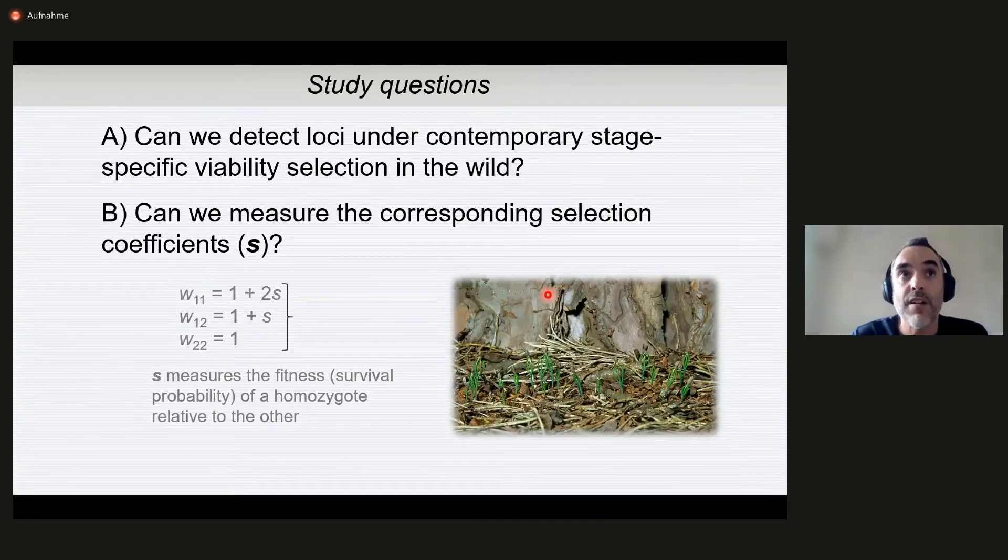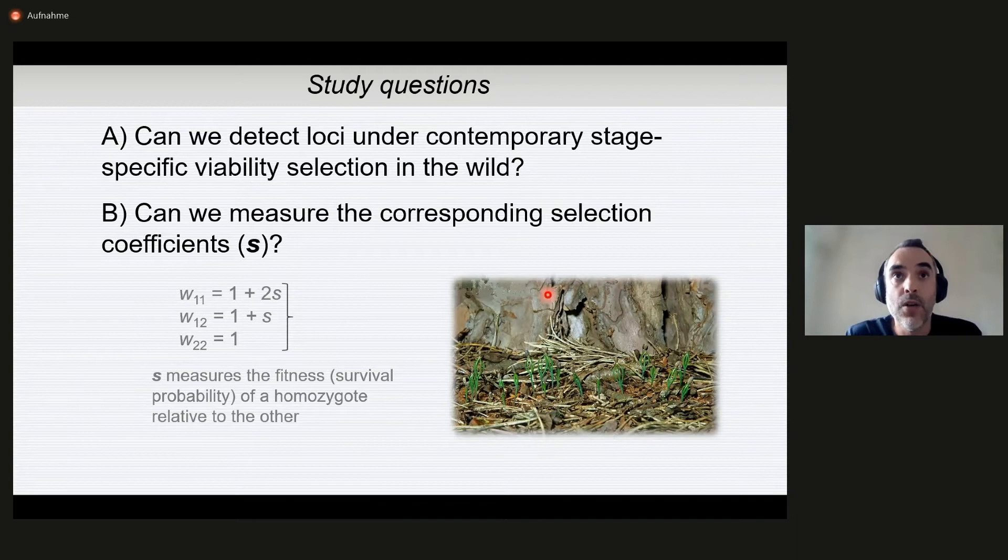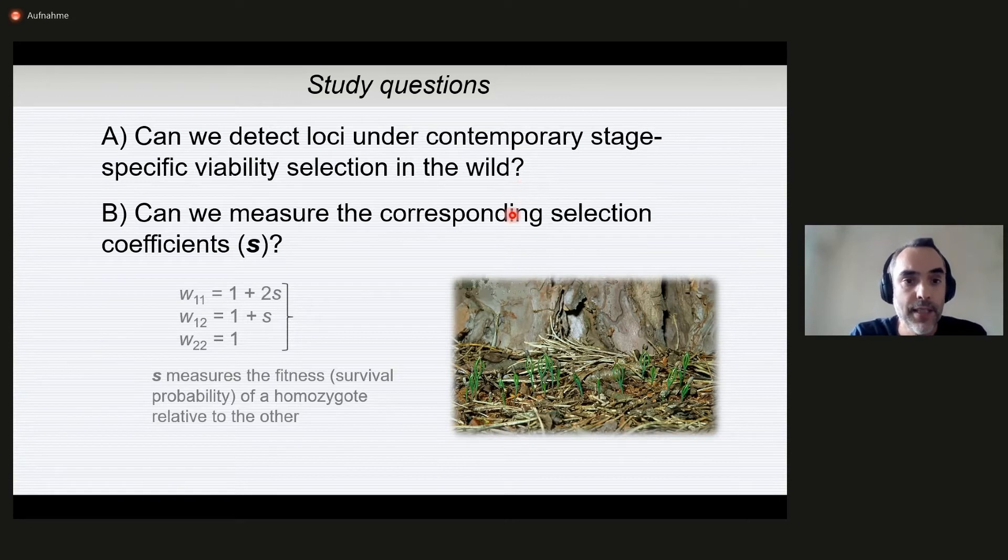The study questions are if we can detect loci under contemporary stage specific viability selection in the wild in field studies, and if we can measure the corresponding selection coefficients, where the selection coefficient is defined as the relative fitness of the alternative homozygotes.